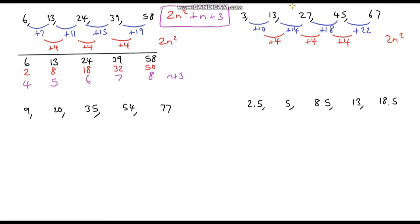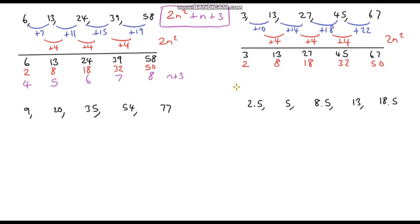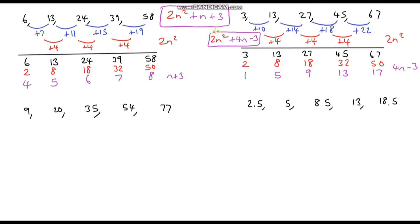Now let's copy down the original sequence again and write down the 2n squared sequence — I've actually done it over here, so I can just copy those numbers across. I subtract my 2n squared sequence from my original sequence to see what I'm left with. This is an arithmetic sequence that goes up by 4 each time, so it's going to be 4n, and it's 3 less than our 4 times table, so it's 4n minus 3. The quadratic part is 2n squared, the arithmetic part is 4n minus 3, so the nth term is 2n squared plus 4n minus 3.